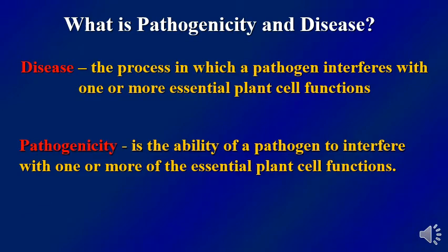We have two important scientific definitions: disease and pathogenicity. Disease is the process in which a pathogen interferes with one or more essential plant functions. Pathogenicity is the ability of a pathogen to interfere with one or more essential plant functions.